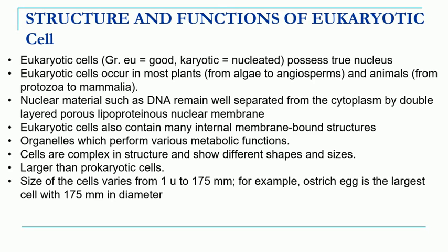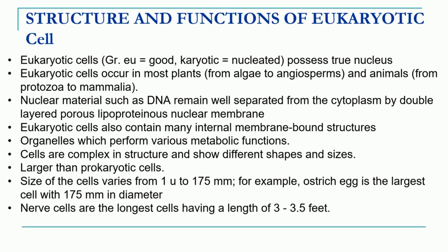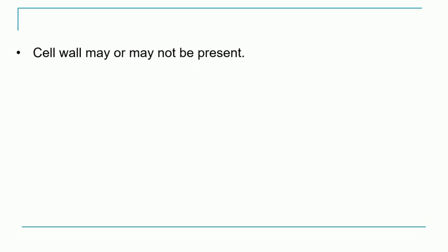If you see the size, there is variation. Eukaryotic cells can range in size from 1 micron to 175 millimeters. For example, the largest cell, which is the ostrich egg cell, is about 175 mm in diameter. Even the nerve cells are one of the longest cells; they have a length of 3 to 3.5 feet.